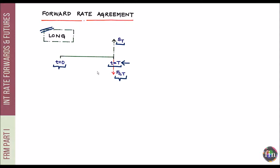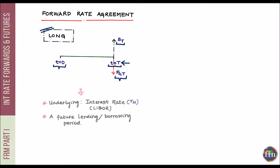Now, if we want to take the essence of this forward and create another forward which has an interest rate as the underlying, we need to examine the nuances that introduces. Typically, when talking about FRAs, they trade on the LIBOR rate — the London Interbank Offered Rate — as the underlying. We will denote this unknown rate as RM, standing for the market rate.